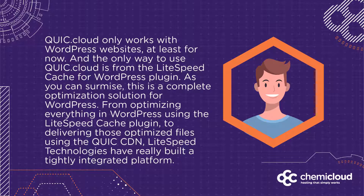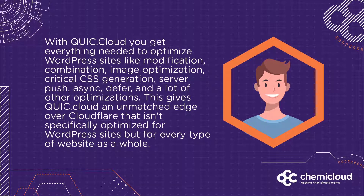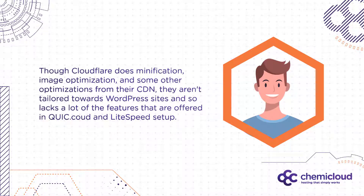With QuickCloud, you get everything needed to optimize WordPress sites like minification, combination, image optimization, critical CSS generation, server push, async, defer, and a lot of other optimizations. This gives QuickCloud an unmatched edge over Cloudflare, which isn't specifically optimized for WordPress sites but for every type of website as a whole. Although Cloudflare does minification, image optimization, and some other optimizations from their CDN, they aren't tailored towards WordPress sites, and so it lacks a lot of the features offered in the QuickCloud and Lightspeed setup.